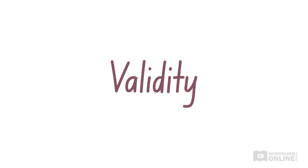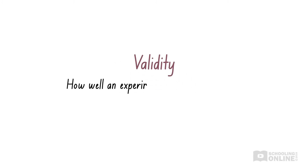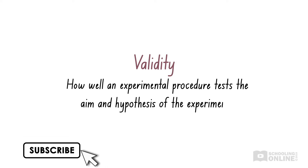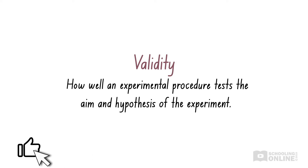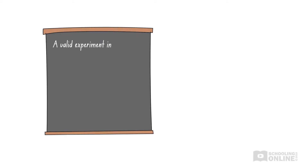After looking at accuracy and reliability, the final component that we need to consider in science experiments is validity. Validity refers to how well an experimental procedure tests the aim and hypothesis of the experiment. In other words, does our method actually find what we set out to find? A valid experiment is one with proper treatment of the independent, dependent, and controlled variables.